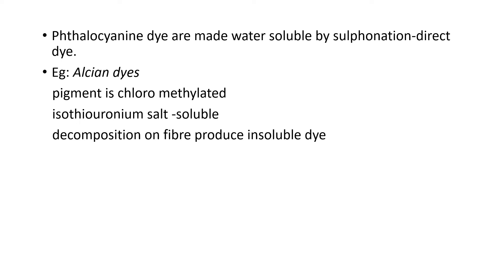Phthalocyanine dyes are made water-soluble by sulfonation. For Alcyan dye, the pigment is chloromethylated and an isothiouronium salt is formed, which is soluble. Decomposition on the fiber produces an insoluble dye. Various substituents on the aromatic ring, such as X, OH, OR, NH2, alkyl, and NO2, are used to increase solubility.